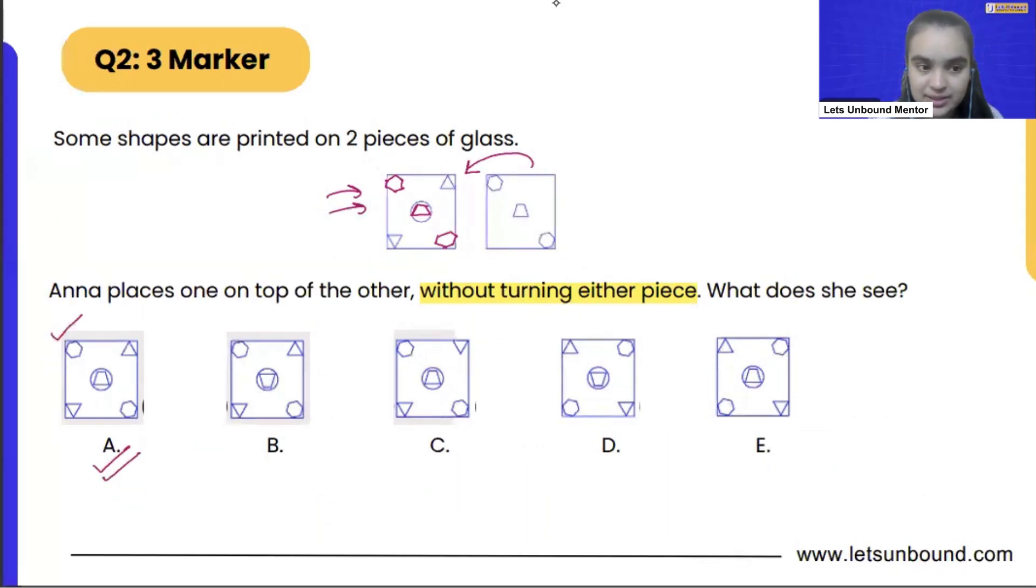Exactly, we are having the same thing. See, hexagons are on the corners, triangles are there, and then inside the circle we are having trapezium. You have to check the position and alignment of all the shapes.